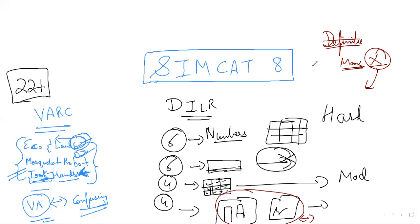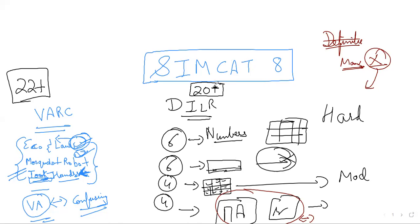Overall, this was not an easy section in this SimCat, but it was on similar lines as CAT. Anything beyond 23 is a plus. 20 plus marks I would say is the bare minimum you should score.